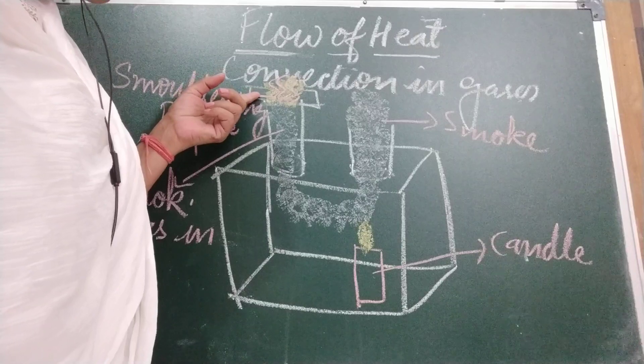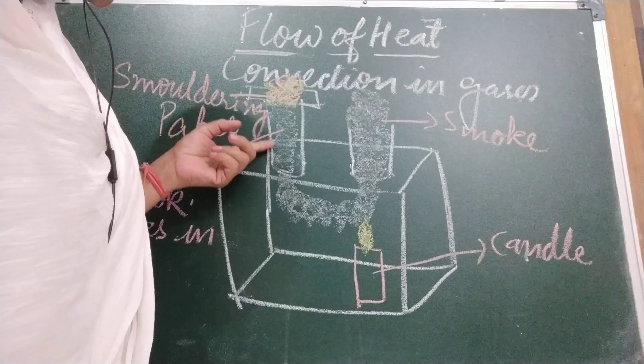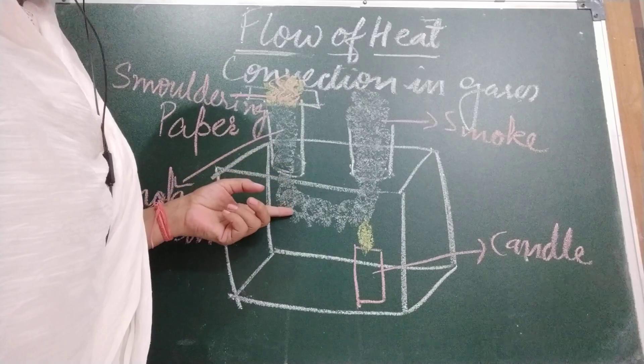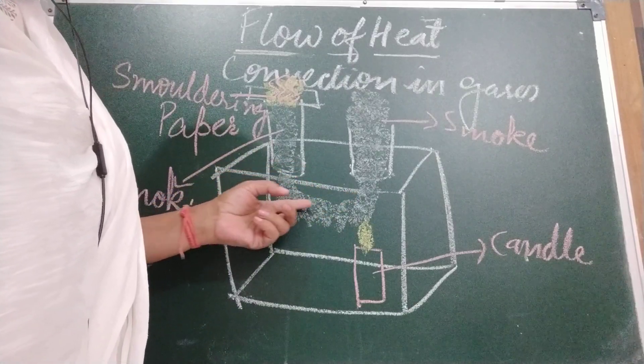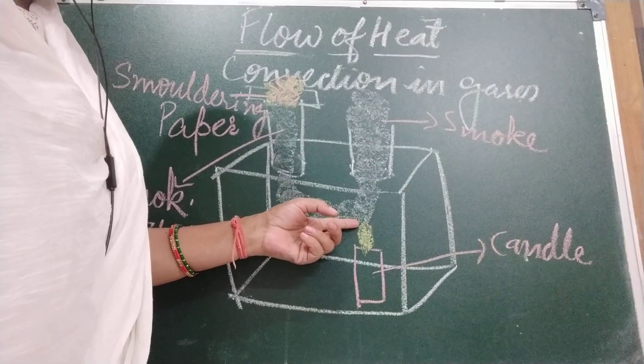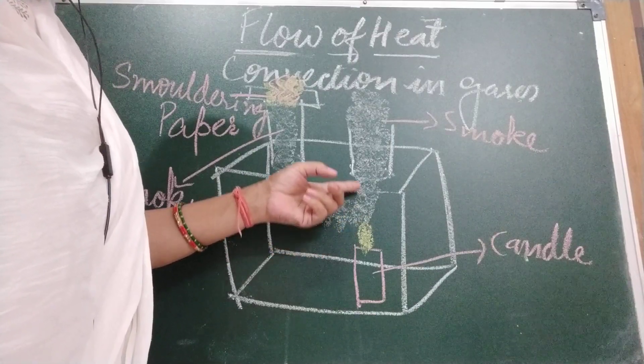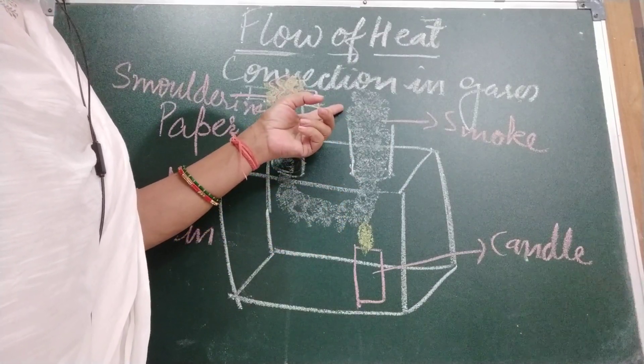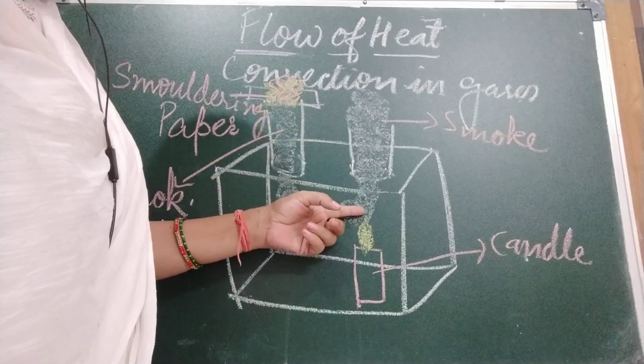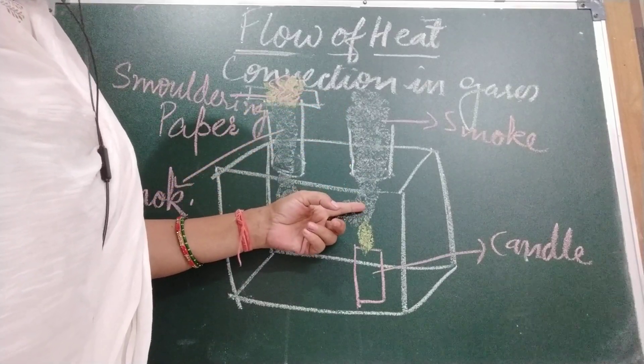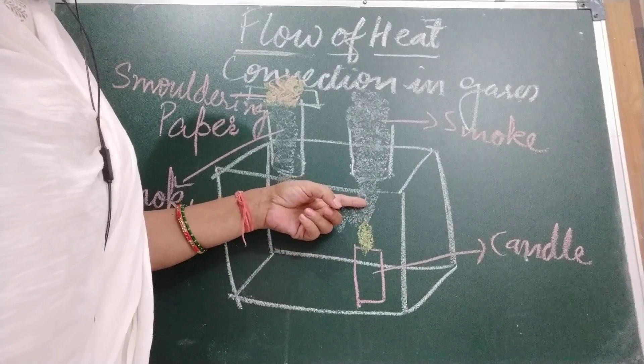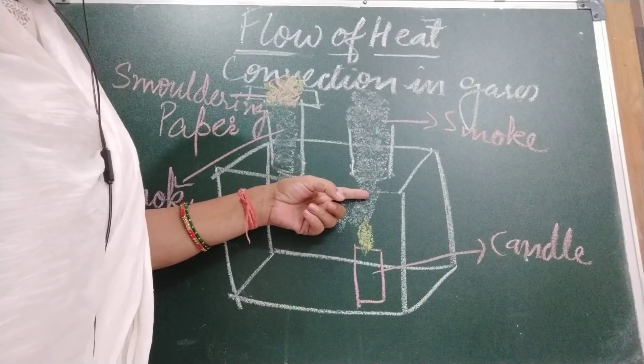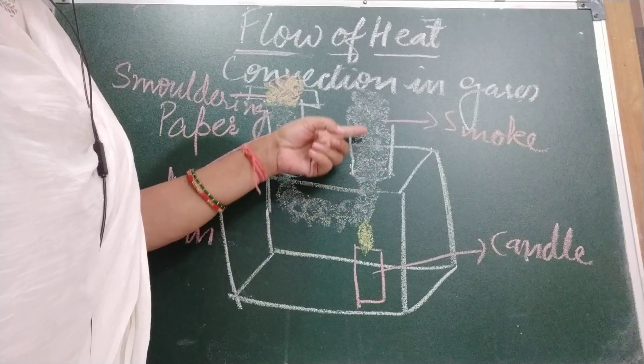We will see smoke entering the box through this chimney. It then gets heated up by the candle. This smoke is heated up by the candle and comes out of the other chimney. As the air above the candle gets heated, it becomes light. The air above the candle gets heated and this air becomes lighter and it goes up, rises up.